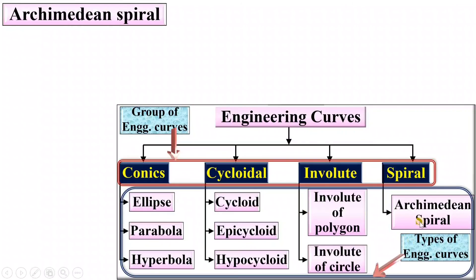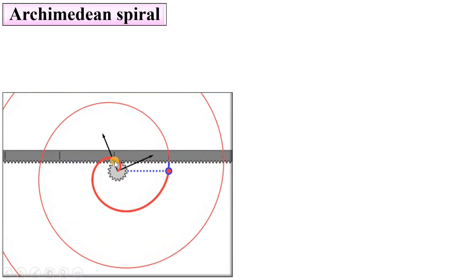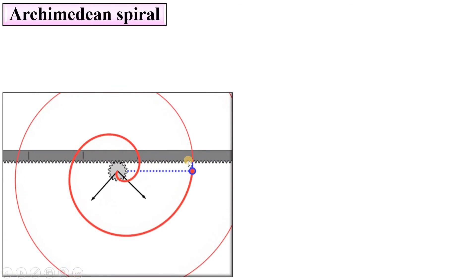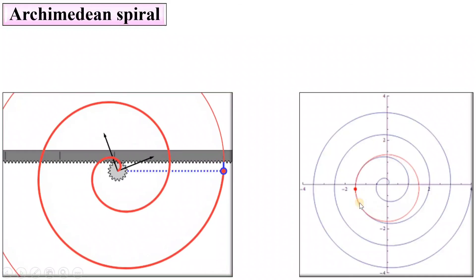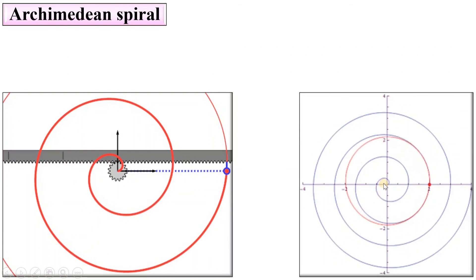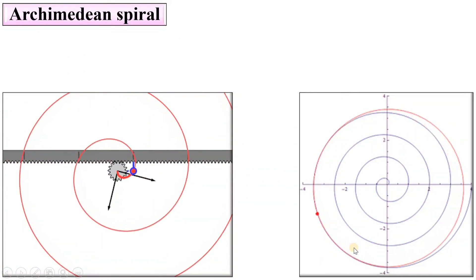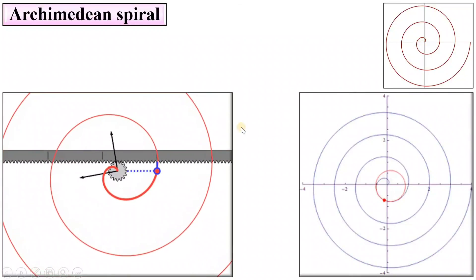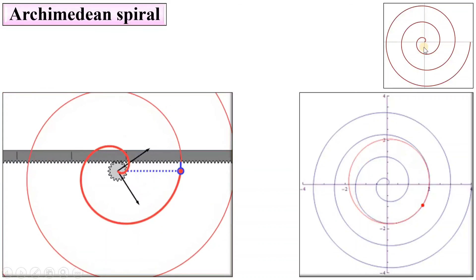The last one is the Archimedean spiral. Here you can see this red color curve is the Archimedean spiral. It can be more than one revolution also.